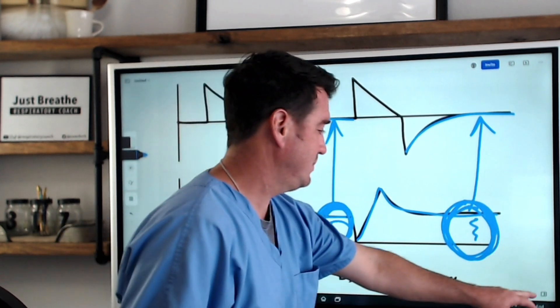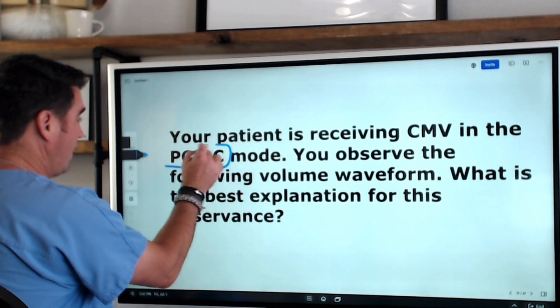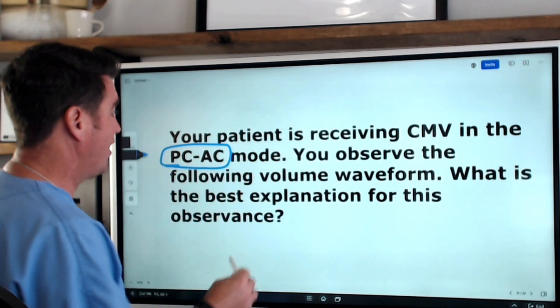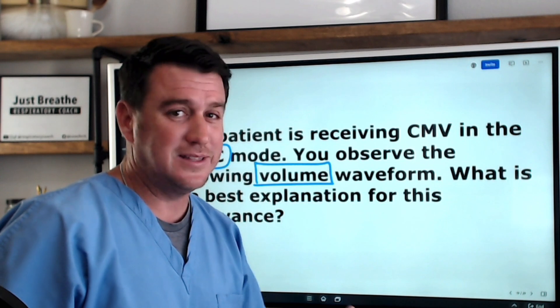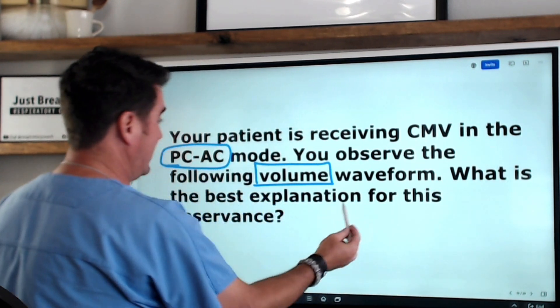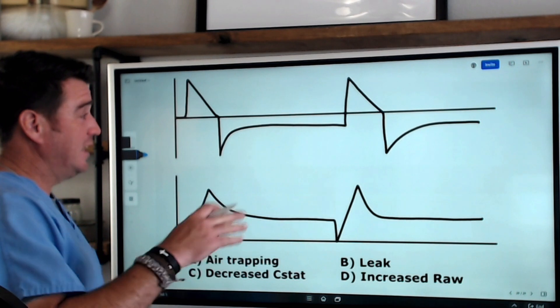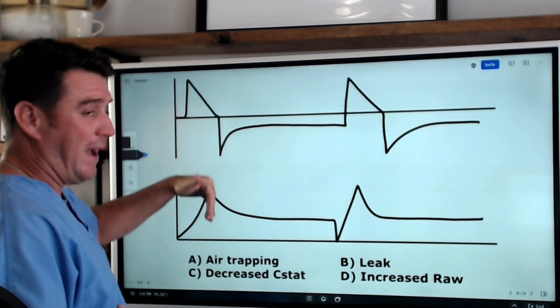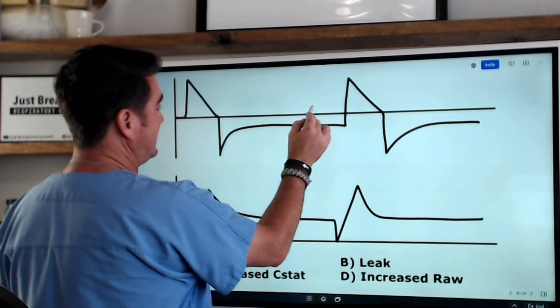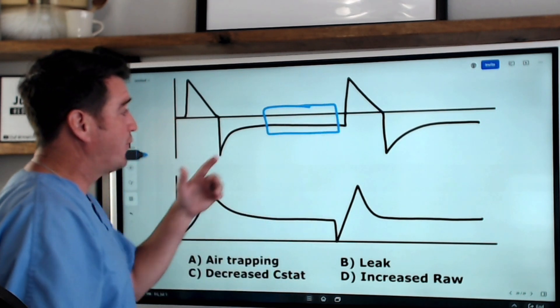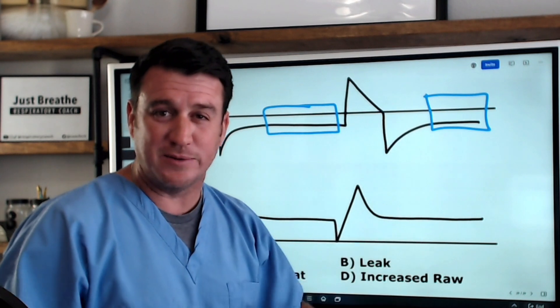Let's look at the next question. Your patient is receiving CMV in the pressure control assist control mode. Again, important right here, we know we're in pressure control. You observe the following volume waveform. Why are they telling me to look at the volume waveform? That right there makes the game extremely simple. What is the best explanation for this observance? Well, let's take a look at it. Now, here we are again. We have a decelerating flow pattern. Again, we knew we were going to have that because we're in pressure control. But what I notice here is that this is failing to return to baseline before the next breath. Both of these are, right? So that right there stands out to me right off the bat. So I'm like, okay, well, let's see what's happening here. Because right now, I'm already thinking air trapping.